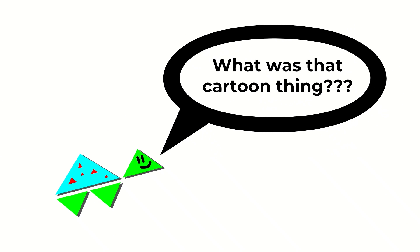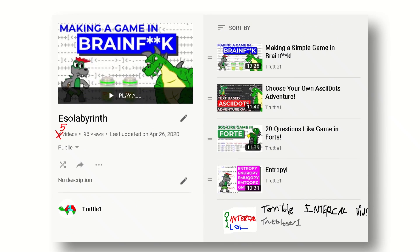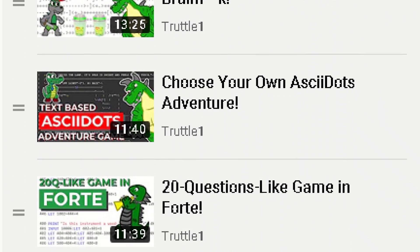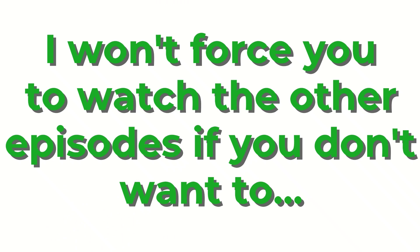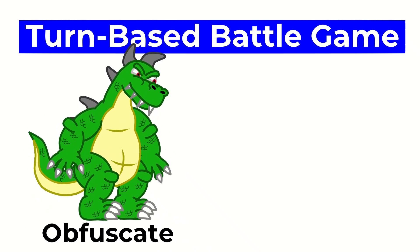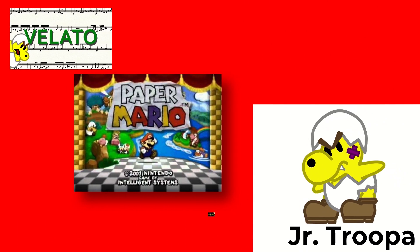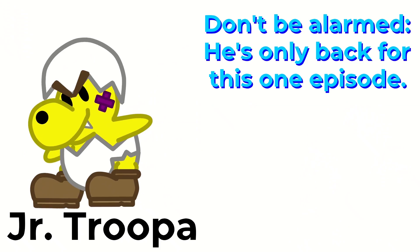Hey, everyone! For any of you that were completely lost from the skit at the beginning of the video, this is actually the final episode of a five-part series I'm doing called Issa Labyrinth. If you want to catch up on the rest of the story, you can watch the previous four episodes, but you don't have to. Junior Troopa is a character from Paper Mario that I used to put in my Yasoleng videos up until 2018, but now he's back.